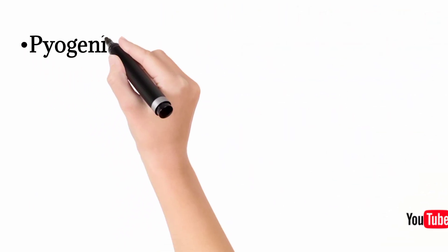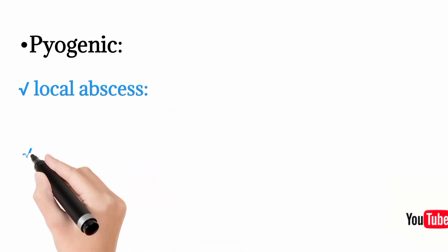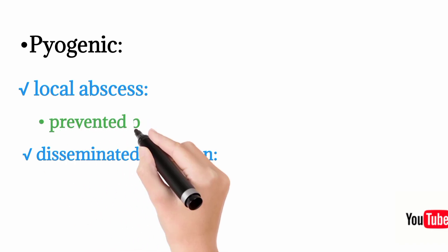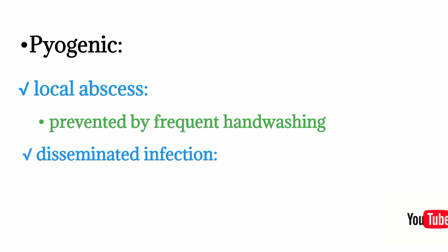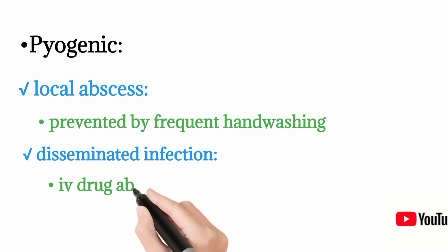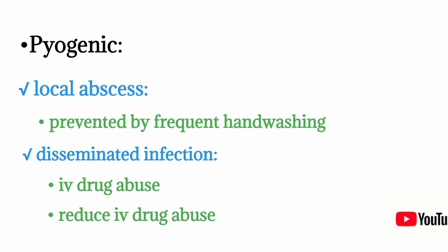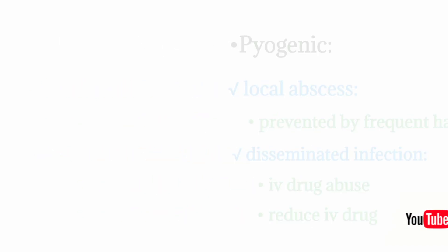Pyogenic infection caused by Staph aureus includes local abscess and disseminated infection. Local abscess means infection of the skin locally, prevented by frequent hand washing. Disseminated infection is commonly caused by IV drug abuse — infection spreads through the blood to multiple organs causing sepsis. Prevention involves reducing IV drug abuse.